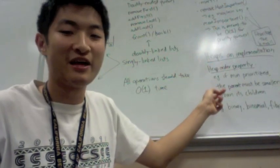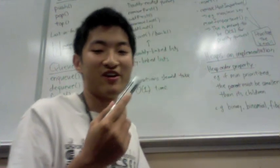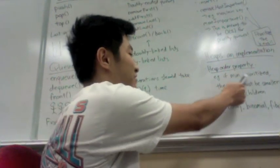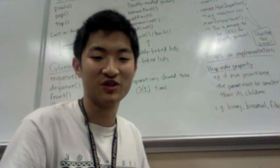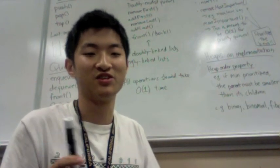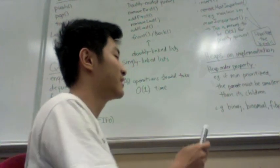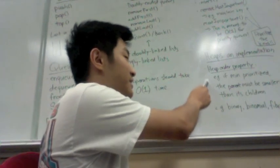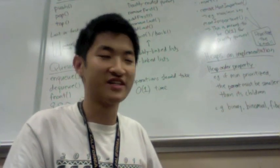And heaps have the heap order property where, for instance, if your priority is a min, if min is prioritized, then the parent must be smaller than all of its children. Sorry, not all of its children, but its children. And so this property is important in allowing the operations to take log time.